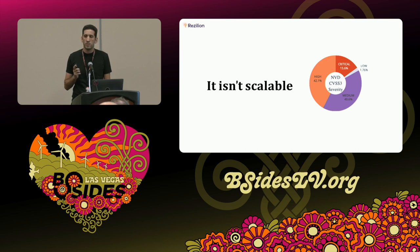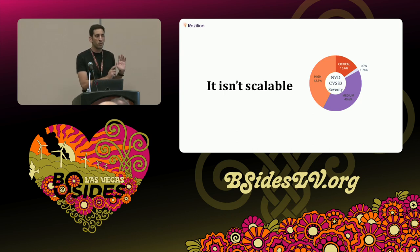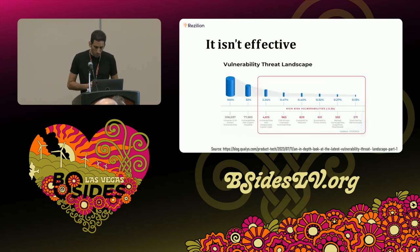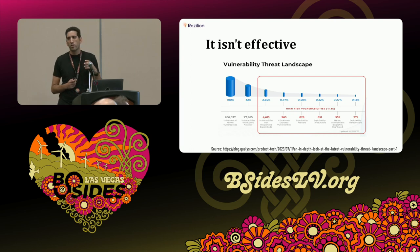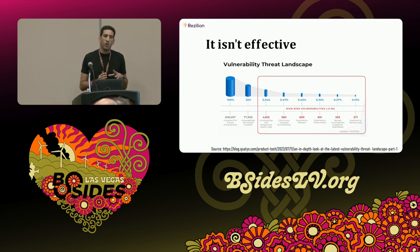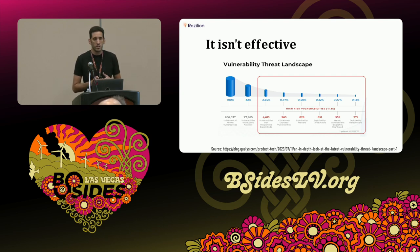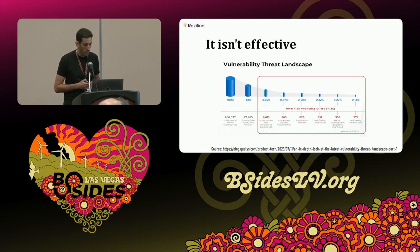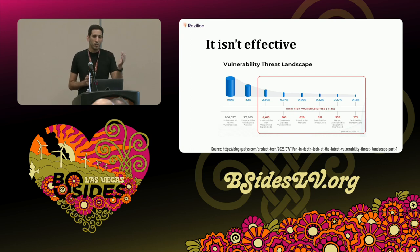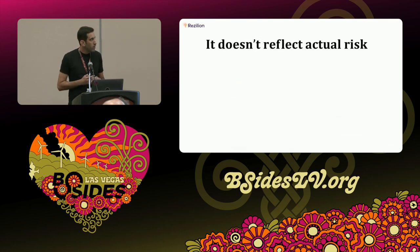Even if you prioritize and focus only on highs and criticals, that's still 57% of NVD — hundreds of thousands of vulnerabilities — so it's not scalable. Furthermore, only a fraction of vulnerabilities will ever be exploited, and only a fraction of those are exploitable in your specific environment. When you focus your time on vulnerabilities unlikely to be exploited, you're wasting limited resources. Attackers don't rely on CVSS scores to determine which vulnerabilities to exploit — they're already a step ahead.